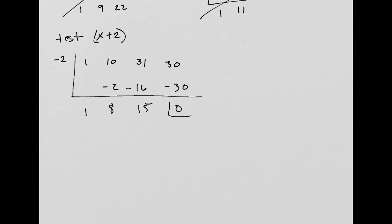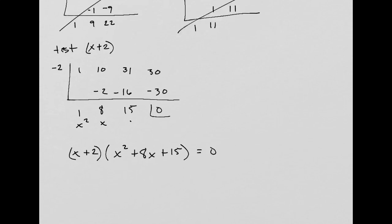So that's my constant, my x, my x squared. So my new polynomial with semi-factored is x plus 2, right from that, times just 1x squared plus 8x plus 15. And I know that equals 0 because it was equal to 0 up here.